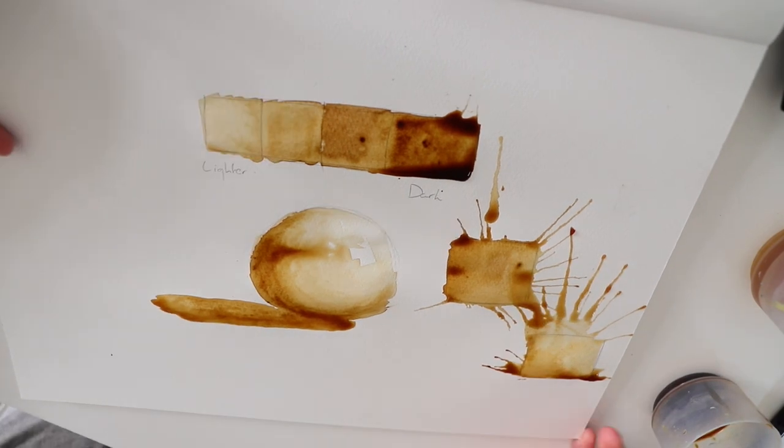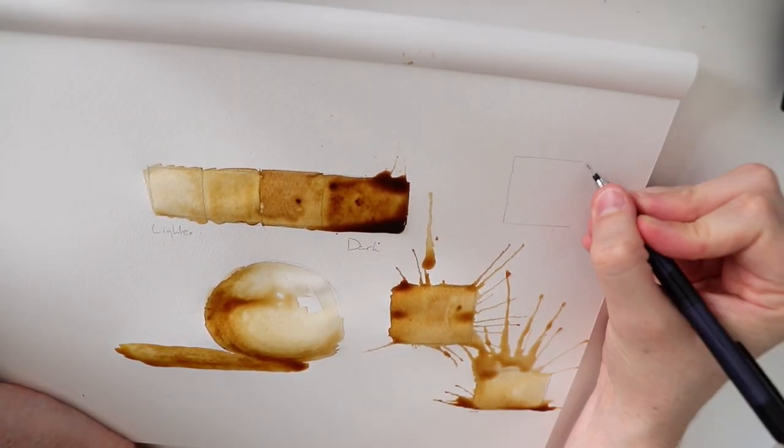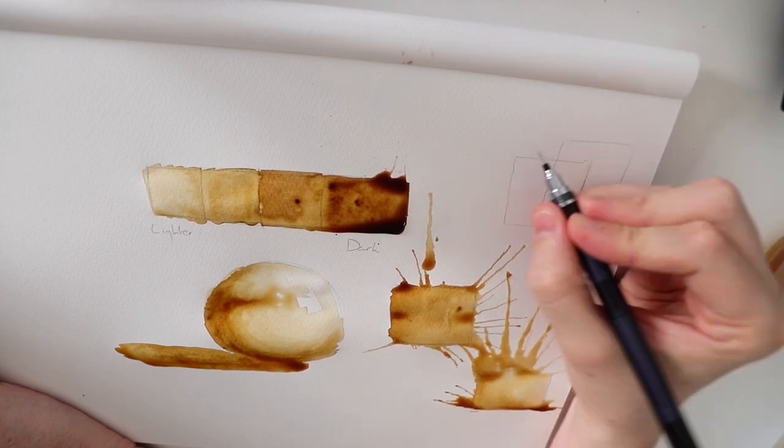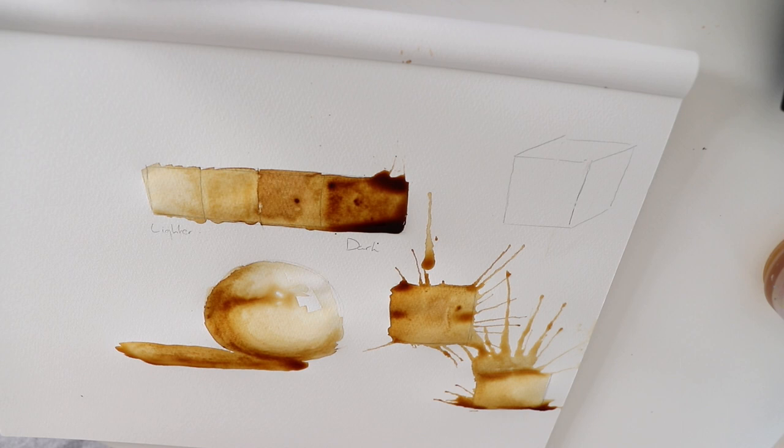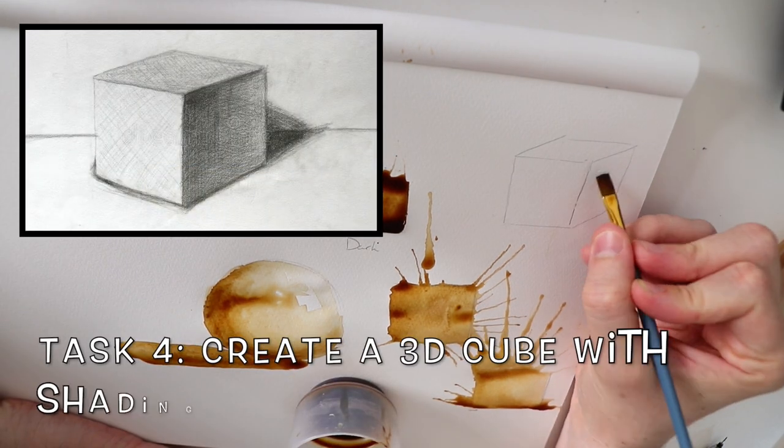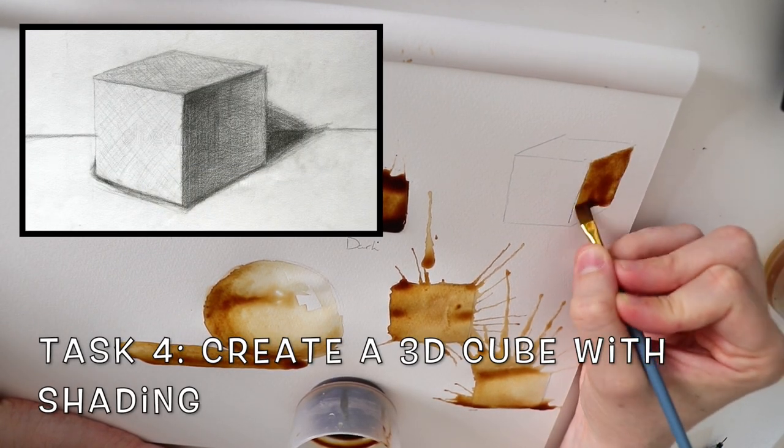The final task is going to be to make a 3D looking cube by adding a dark, a middle, and a lighter side on the cube. Again I would suggest getting an image to use as a point of reference because doing this just from your imagination is going to be incredibly difficult.